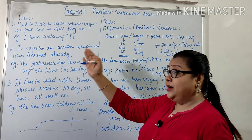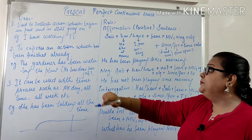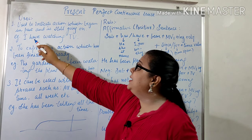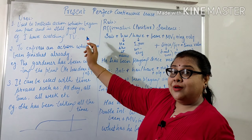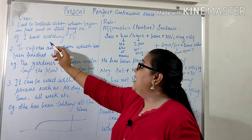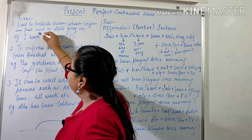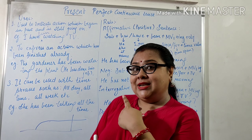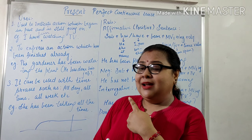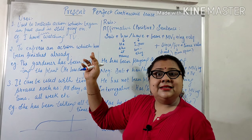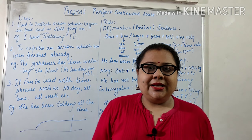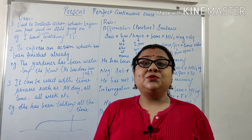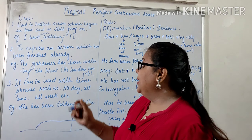Now I'll talk about the applications. The first use is to indicate an action which began in the past and is still going on. For example: 'I have been watching TV' — notice I haven't used any time value here. Another example: 'She has been reading the newspaper for the last half an hour.'